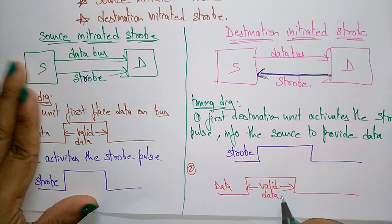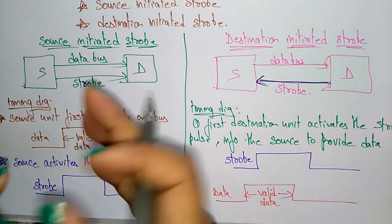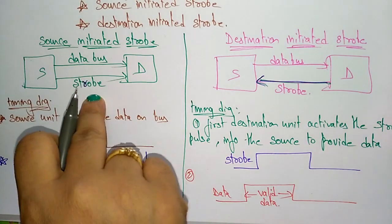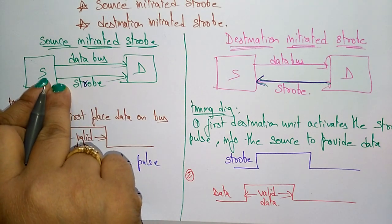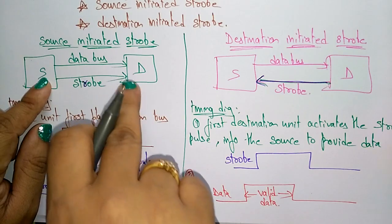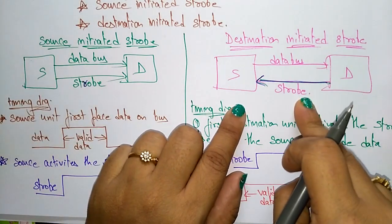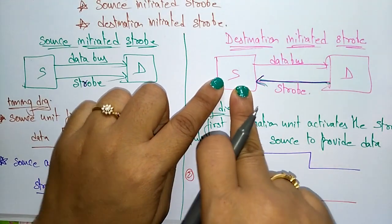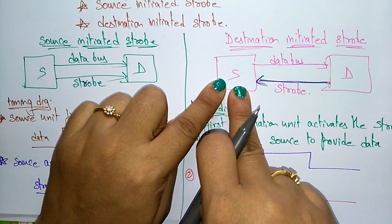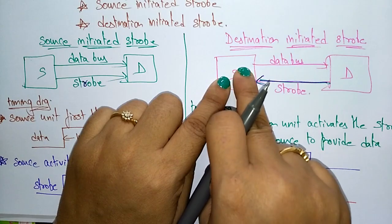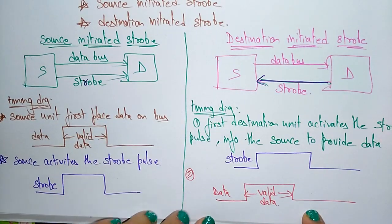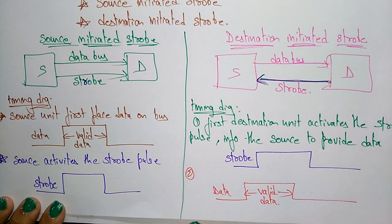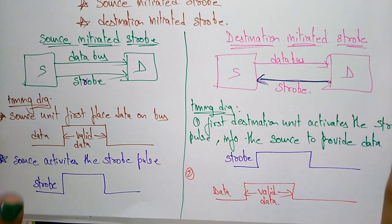The difference between the two: in source-initiated strobe, the strobe signal says that valid data has been placed on the data bus, so the destination should accept it. In destination-initiated strobe, the destination activates the strobe first, signaling the source to please place data on the data bus, and then the source places valid data on the data bus.